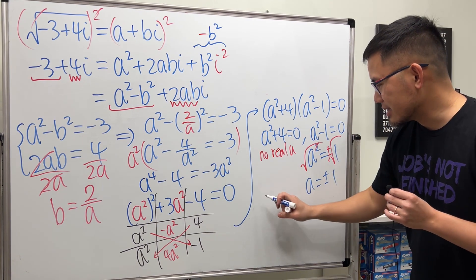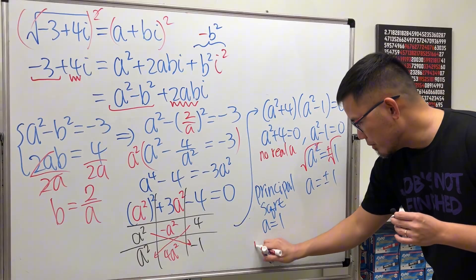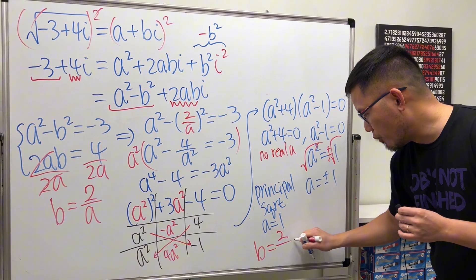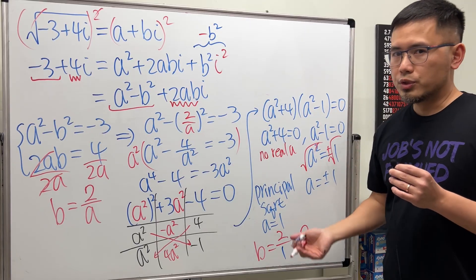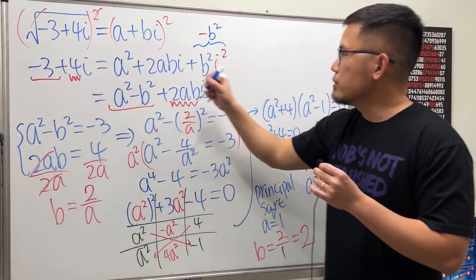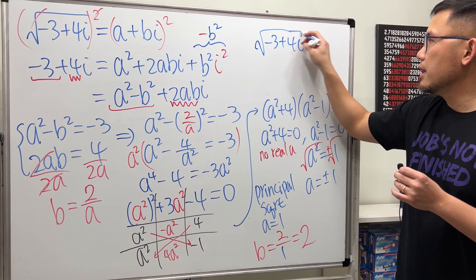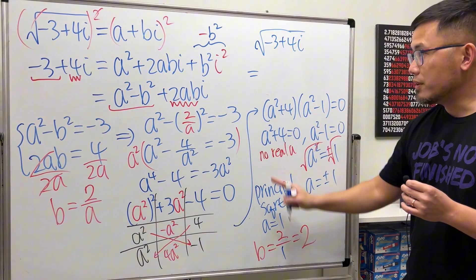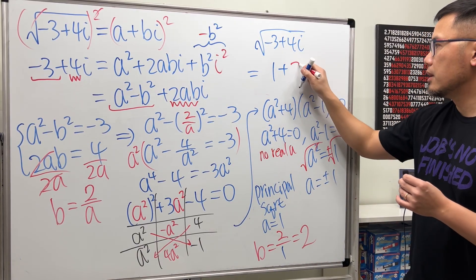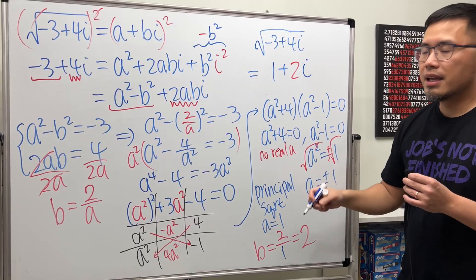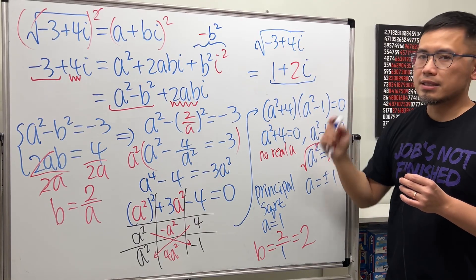With a equals 1, we find b equals 2 over a equals 2 over 1 equals 2. So the square root of negative 3 plus 4i equals 1 plus 2i. This is the principal square root of this complex number.